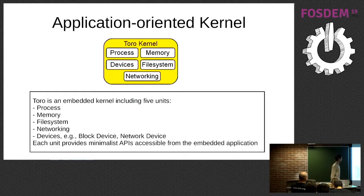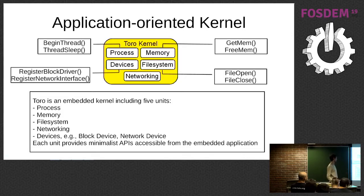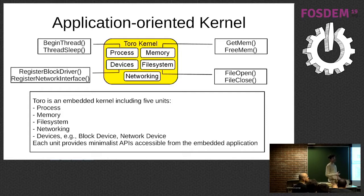So what exactly is Toro? It is an application-oriented kernel, which is made of more or less a set of units, which are process, memory, file system, and networking. These units provide a simple API for the user application. For example, the process unit provides machine thread, free thread, and all the manipulation of the thread. The file system unit provides some API to manipulate files and so on.